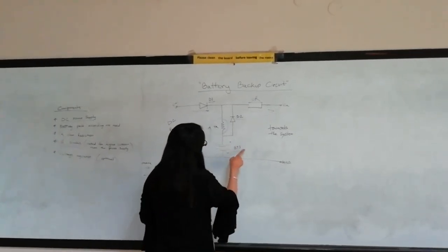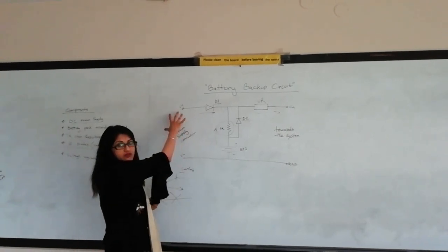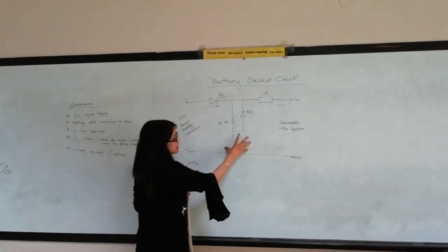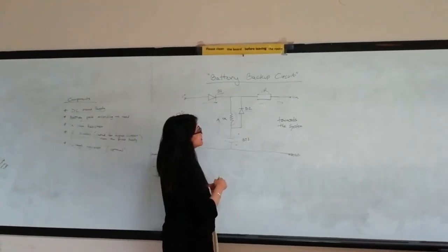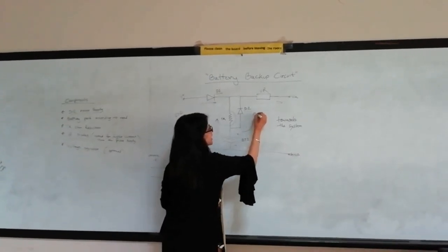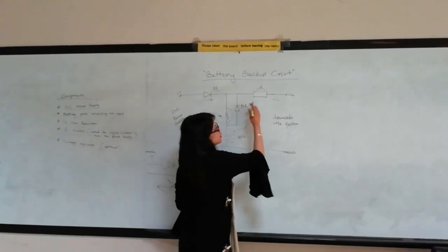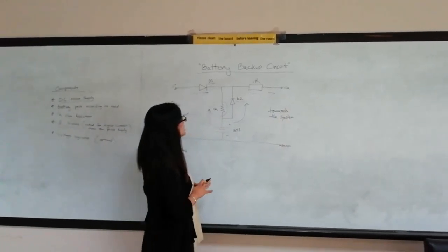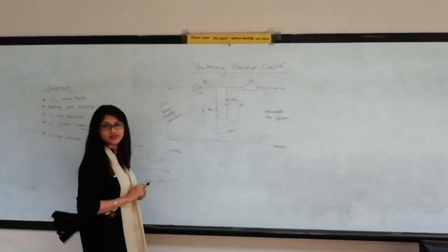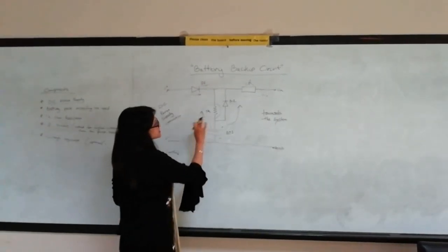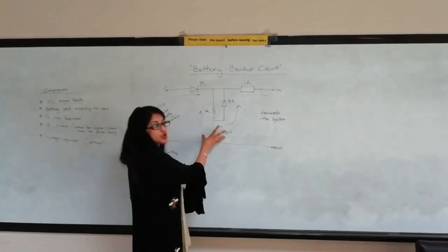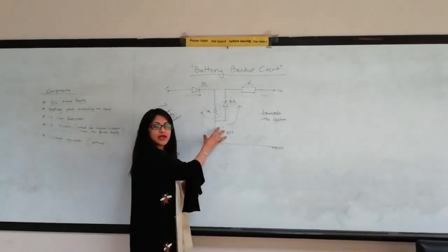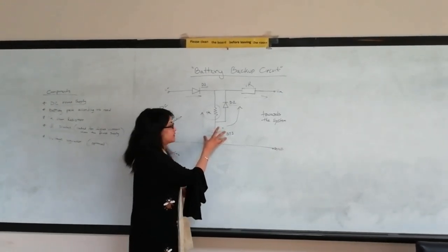For example, whenever the grid goes off, this battery will be active and with the help of this diode, it will create a path for the current and flow towards the system. So what is the purpose of this resistor? This resistor is basically needed to charge this battery slowly and it also acts as a protector for the battery.